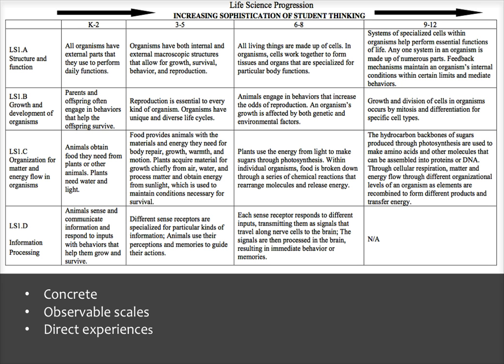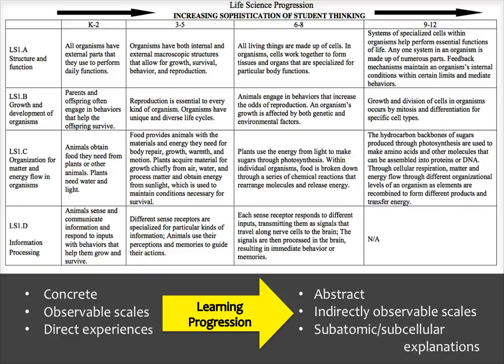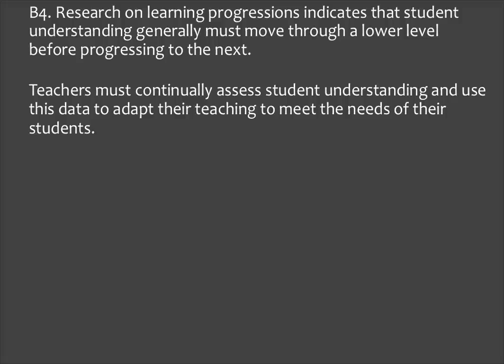Looking at the components of one disciplinary core idea for the life science progression, you'll notice that the content at lower grades is more concrete and at observable scales open to students' direct experiences. As learning progresses, the ideas become more abstract and move to indirectly observable scales that are very large or very small. Research on learning progressions indicates that student understanding generally must move through a lower level before progressing to the next. Therefore, teachers must continuously assess student understanding and use this data to adapt their teaching to meet the needs of their students.